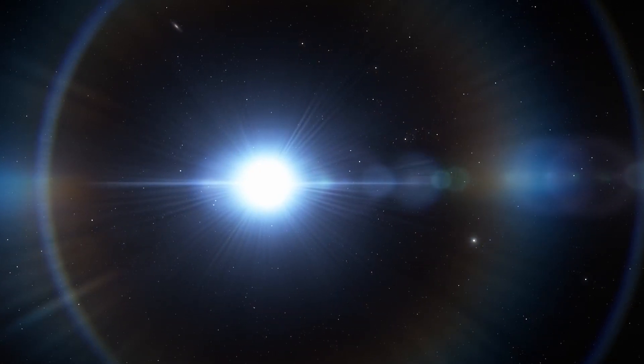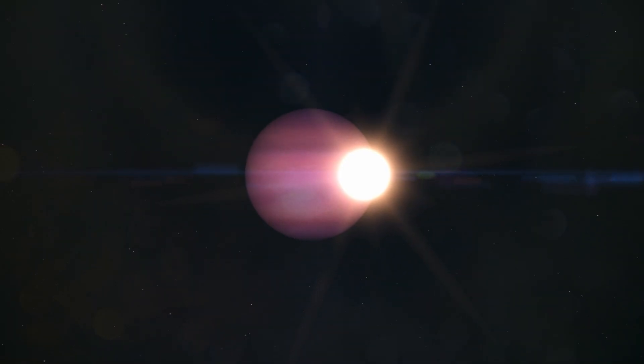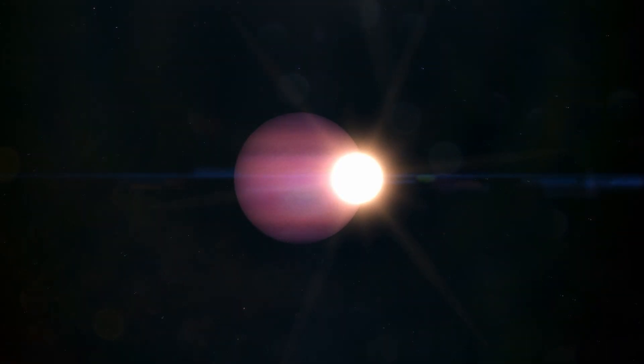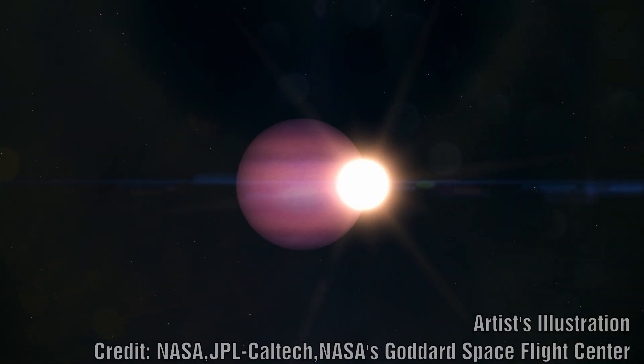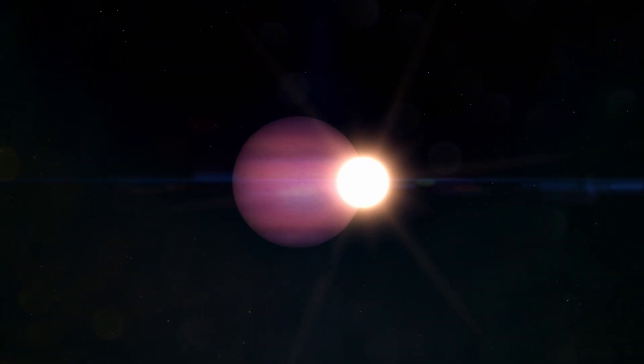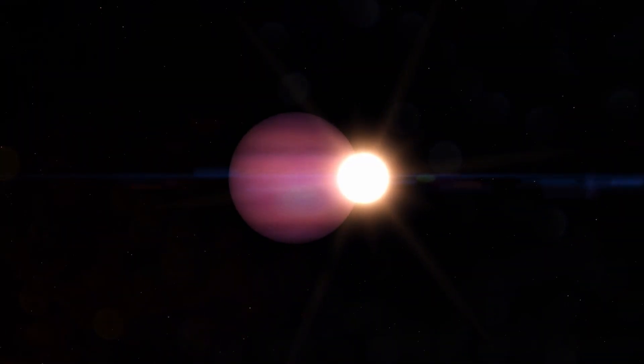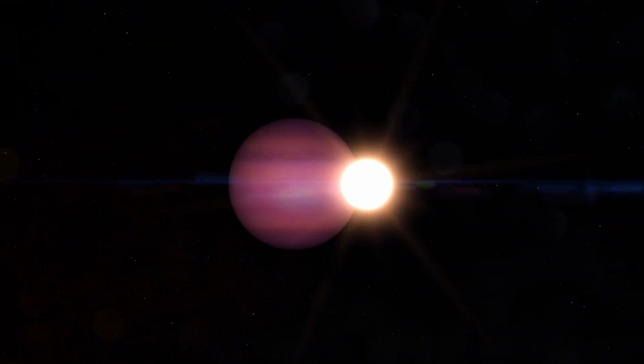they have found a white dwarf star which has a gas giant 10 times its size orbiting very close to the star, and this breaks their model of how white dwarf stars evolve. Let's explore this in more depth.